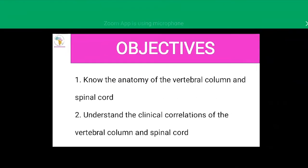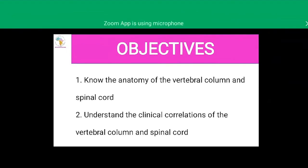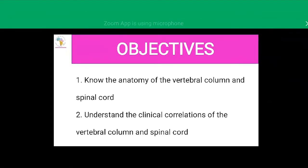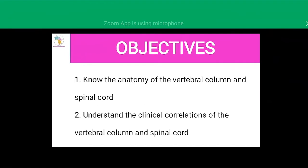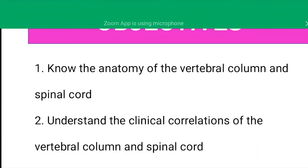The objectives of today's lecture: by the end of this lecture, we'll be able to discuss the anatomy of the vertebral column and spinal cord, and understand the clinical correlations of the spinal cord and vertebral column.